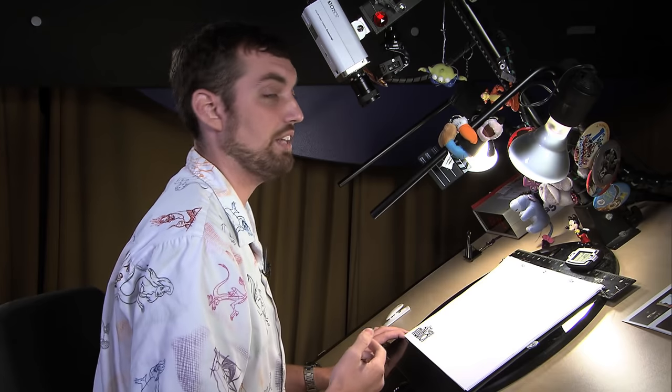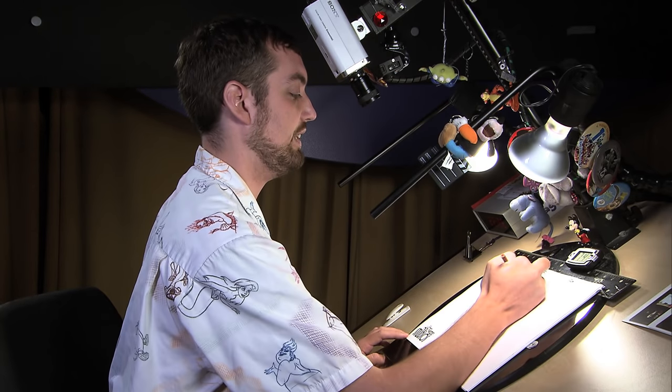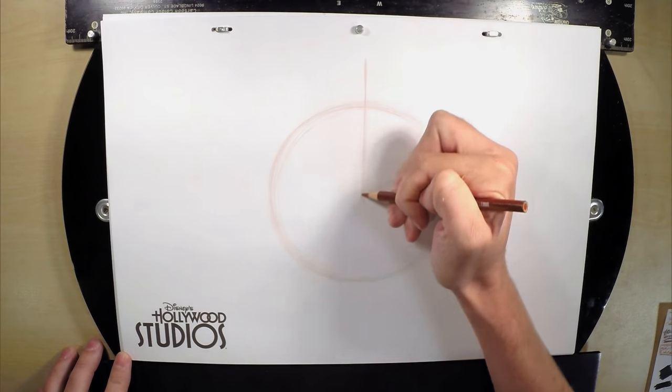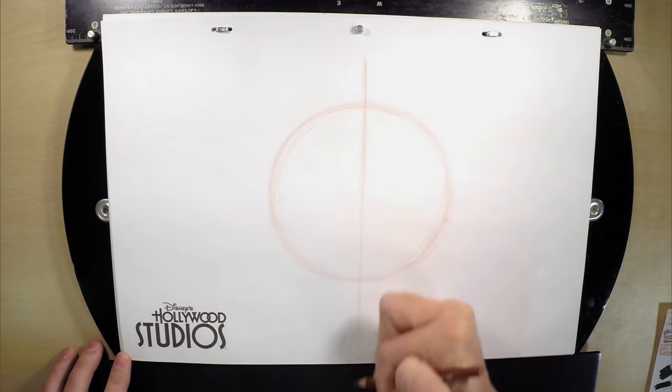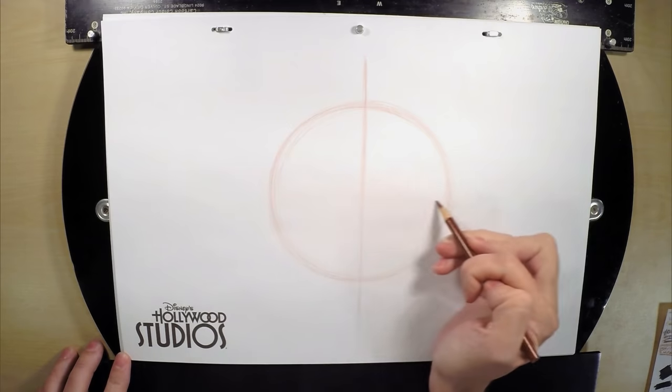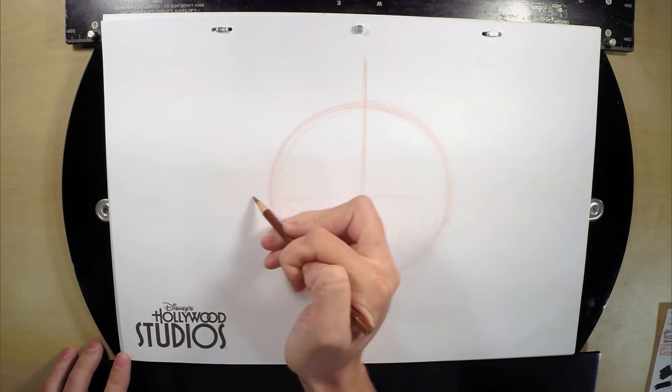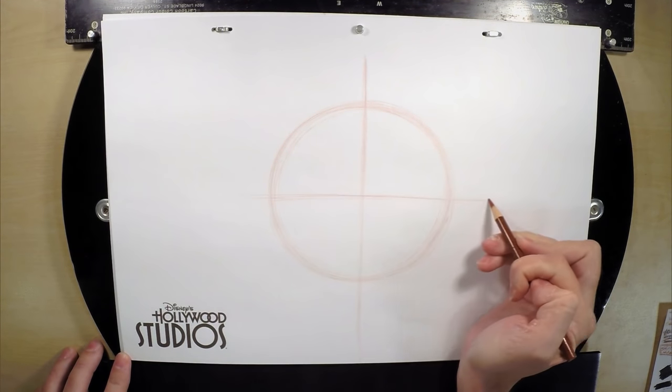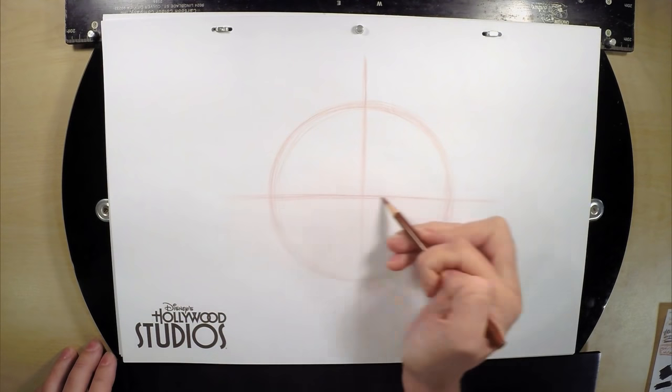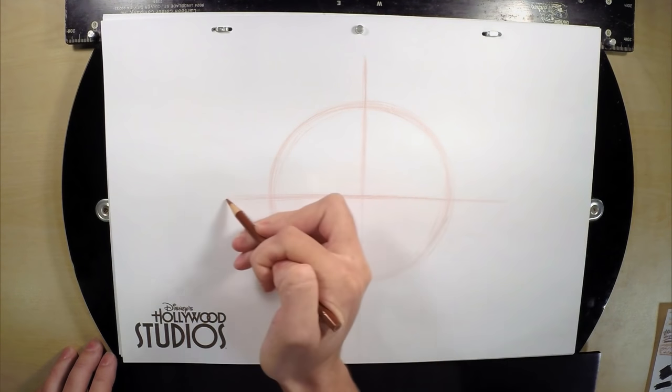Then we need guidelines. Guidelines tell us where we put the pieces of the character, like eyes, nose, mouth, etc. We need to know where the center of his head is. He's going to be looking straight at us. We're going to divide our circle in half, top to bottom, then into quarters, from right to left. You really want to keep those lines really light. You don't want to make it look like you're putting a target on his head, so really light with those lines.